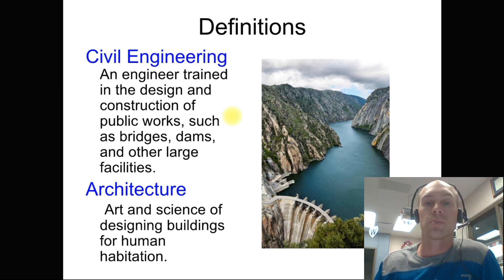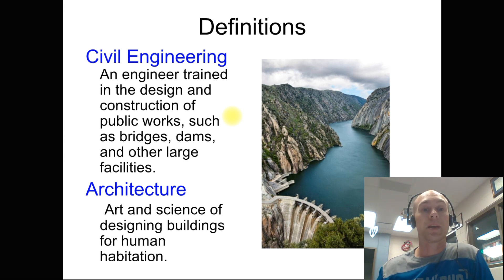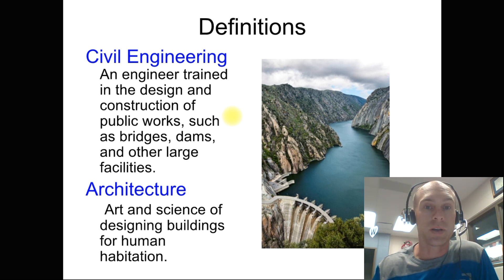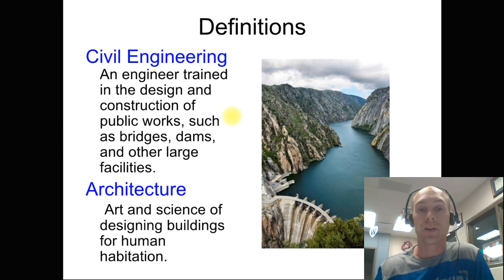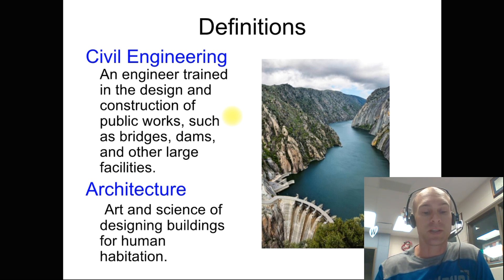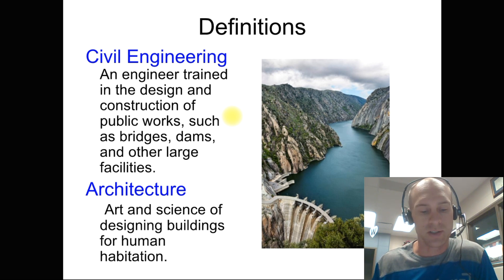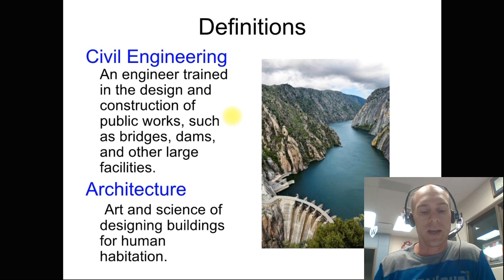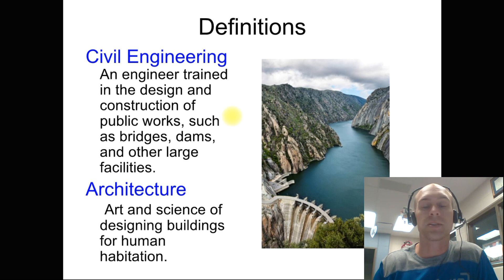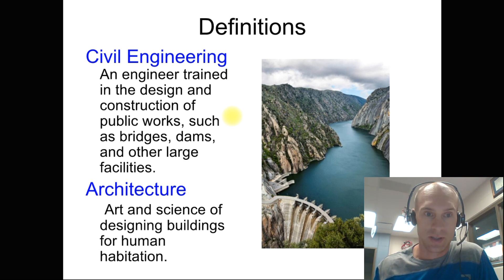Civil is the oldest branch of engineering. In general, engineers were used for military purposes. The term 'civil' was added to separate them from other engineers who worked on military or mechanical type projects. Architects are licensed professionals who design commercial and residential structures that are used by humans.